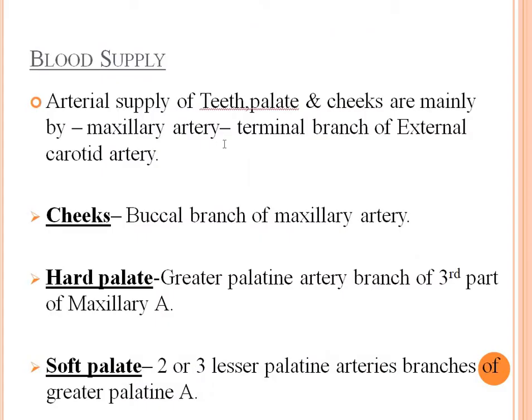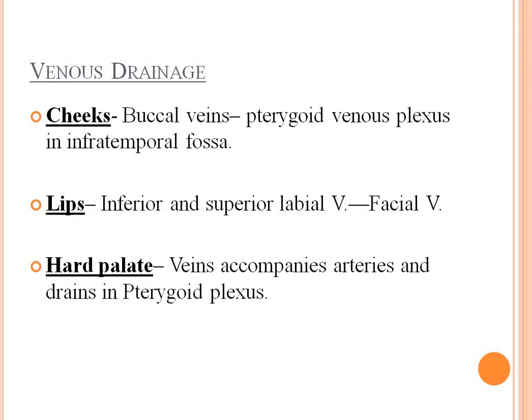The blood supply: arterial supply of the teeth, palate, and cheeks comes mainly from the maxillary artery and the tonsillar branch of the external carotid artery. The cheek is supplied by the buccal branch of the maxillary artery. The hard palate by the greater palatine artery, a branch of the third part of the maxillary artery. The soft palate by the lesser palatine arteries. Venous drainage of the cheek is by the buccal veins and pterygoid venous plexus in the infratemporal fossa. Lips drain via the inferior and superior labial veins and the facial vein. The hard palate veins accompany the arteries and drain into the pterygoid plexus.